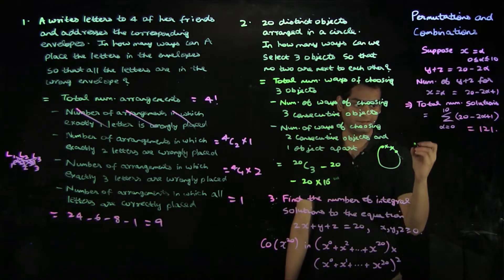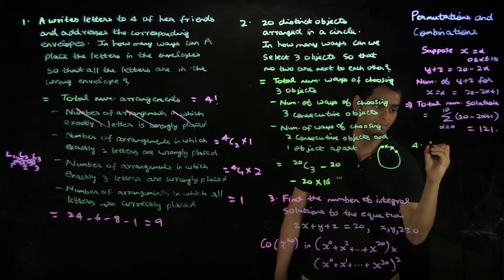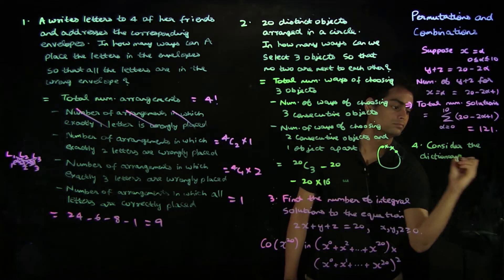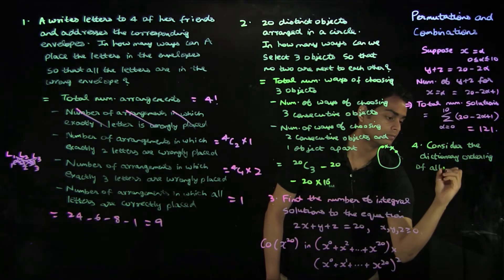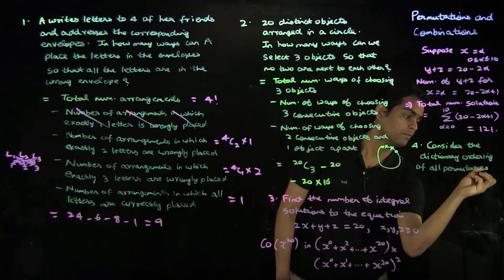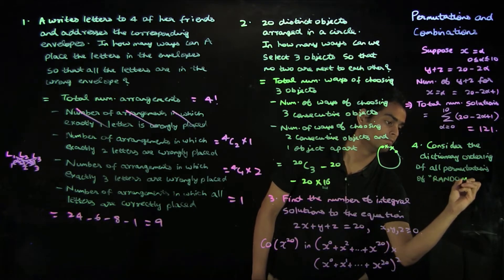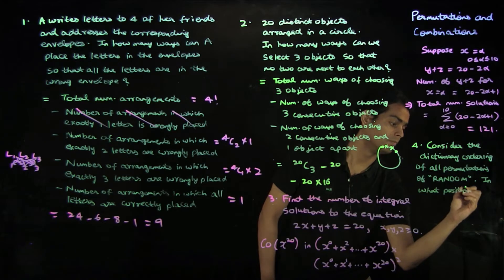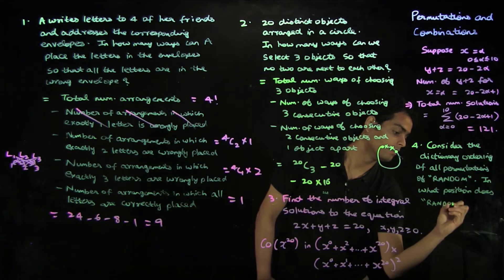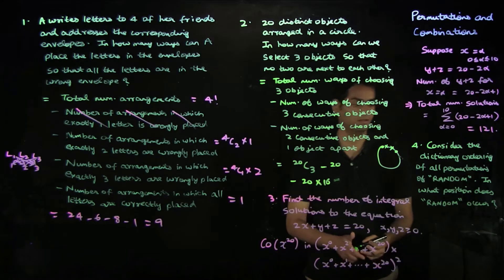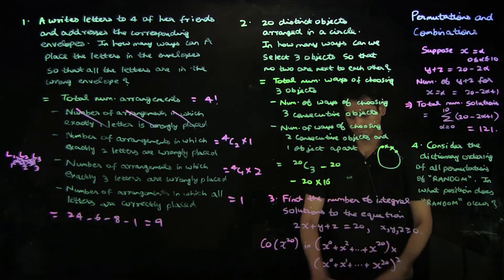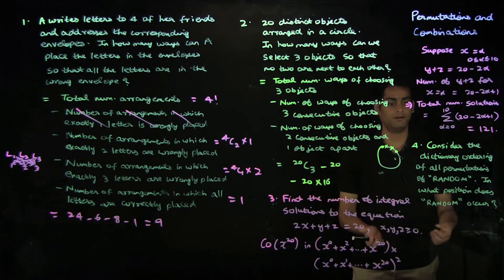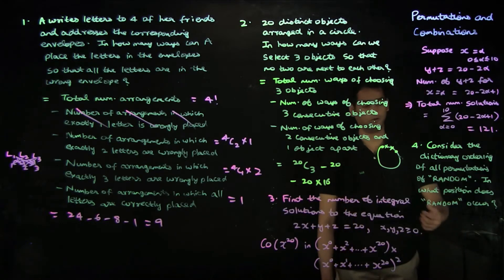Let us look at a final example for this lecture series. It asks you to consider the dictionary ordering of all permutations of the word RANDOM and find what position the word RANDOM occurs in. This word has six different letters, so there are 6 factorial different permutations, and we have to find the rank of the word RANDOM lexicographically.